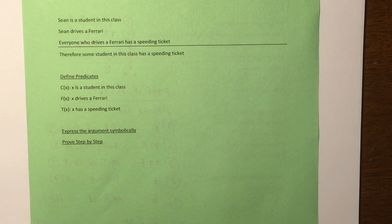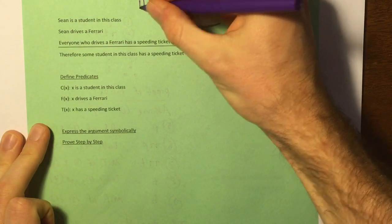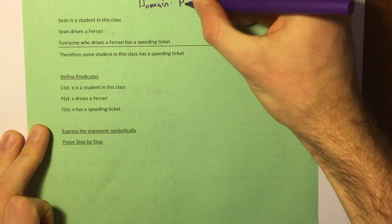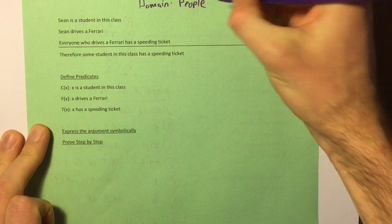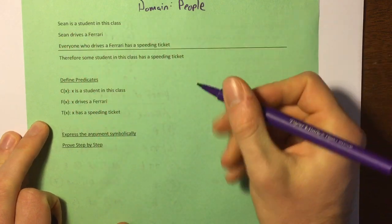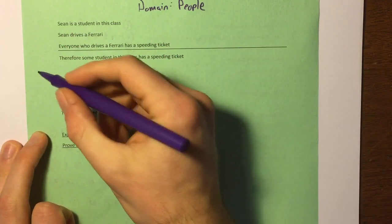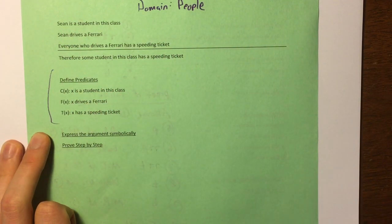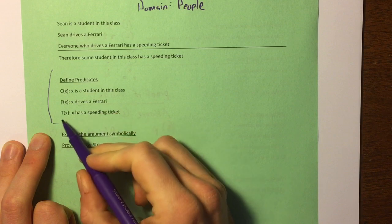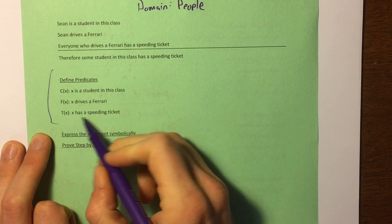But let's work through the actual symbolic proof. We're going to do this all with predicates and quantifiers, and we're going to be working in the domain of people. These are the predicates we're going to be using: C of X — X is a student in this class; F of X — X drives a Ferrari; and T of X — X has a speeding ticket.